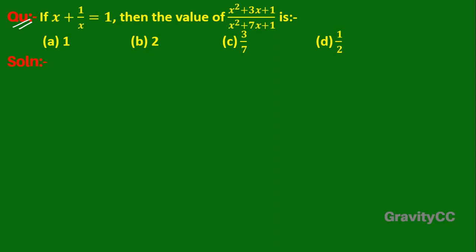The question: if x plus 1 upon x equals 1, then find the value of x squared plus 3x plus 1 upon x squared plus 7x plus 1. Given that x plus 1 upon x is equal to 1.